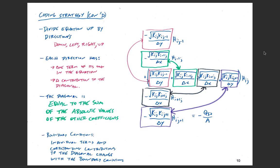The diagonal equals the sum of the absolute values of all the other coefficients. I've drawn arrows and boxes to show how these fit together. With boundary conditions, the individual terms and their corresponding contributions to the diagonal change. We start with the baseline equation and break it up: the downward part is the red boxes, the left part is the green boxes, the right part is the black boxes, and the up part is the purple boxes.